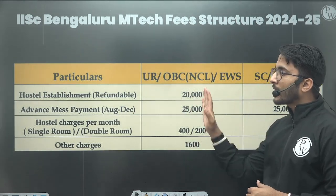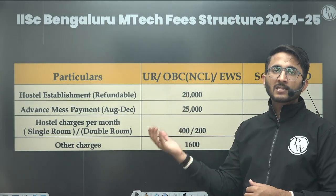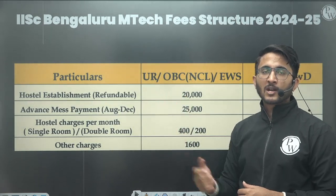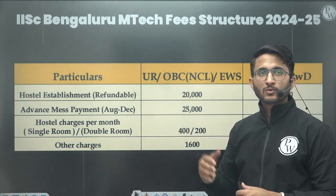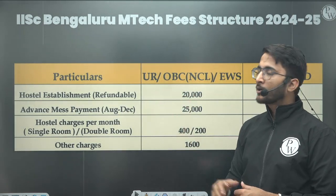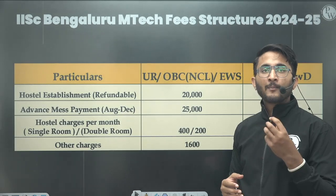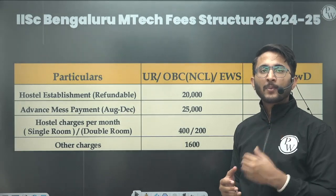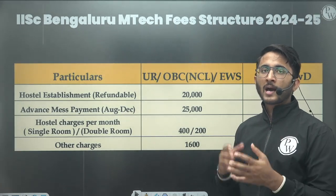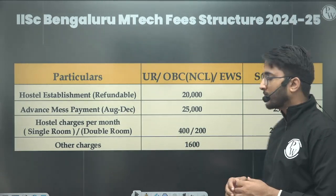This is the total fees covering hostel plus academic parts at IISC Bengaluru. Students who want to join IISC Bengaluru need to pay this amount. Along with this, you will also get a monthly stipend of ₹12,400, so you are able to manage all your expenses.